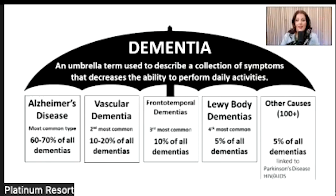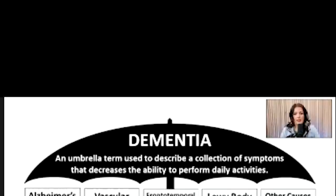Alzheimer's is the most common form of dementia, accounting for 60 to 70% of all dementias. It is a degenerative disease that attacks the brain, resulting in impaired function. It primarily affects language, behavior, and memory. It manifests with memory loss such as trouble recalling events, recognizing people, naming objects, or learning new information.